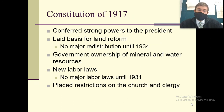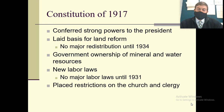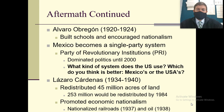The Constitution of 1917 gave the president a basis for land reform, but there were no major land giveaways until 1934, so they didn't see the fruits of their labor for quite a while. The government retained ownership of mineral and water sources. They didn't pass major labor laws until around 1931 — there were some that came out of the Constitution in 1917, but not a lot. It also placed restrictions on the church and clergy.